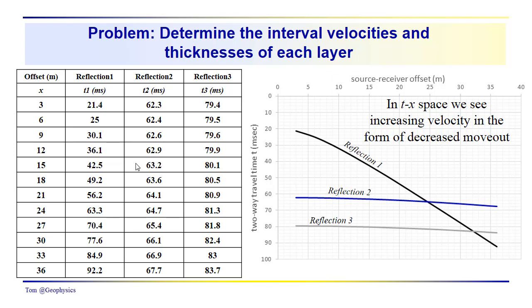Okay, well welcome back. I left you with this problem to work on the last time around. You had offset distances, this is data from a common midpoint gather, so you have source receiver offsets from 3 to 36 meters.